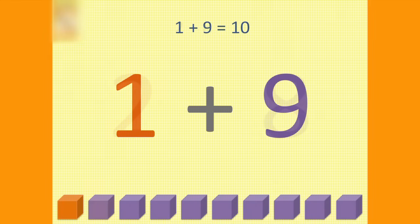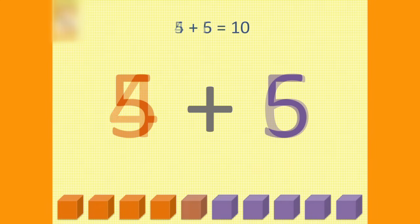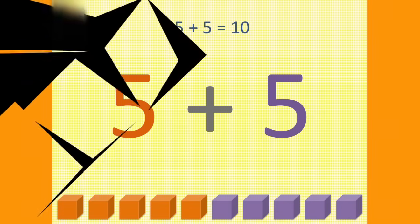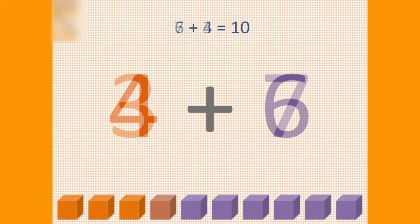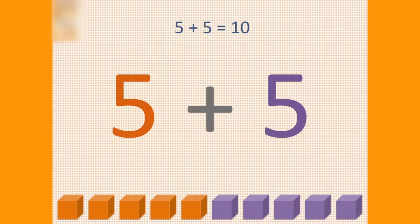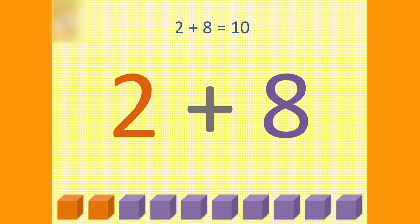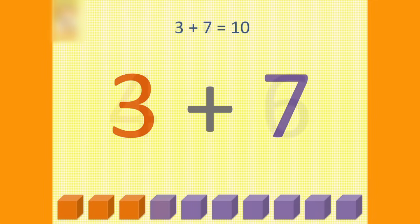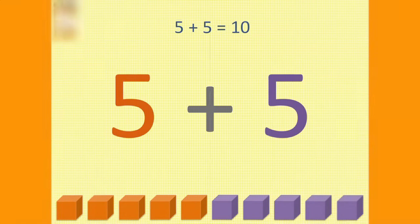One and nine is ten, two and eight is ten, three and seven is ten, four and six is ten, five and five is ten. And then we start again. One and nine is ten, two and eight is ten, three and seven is ten, four and six is ten, five and five is ten. And then we start again.